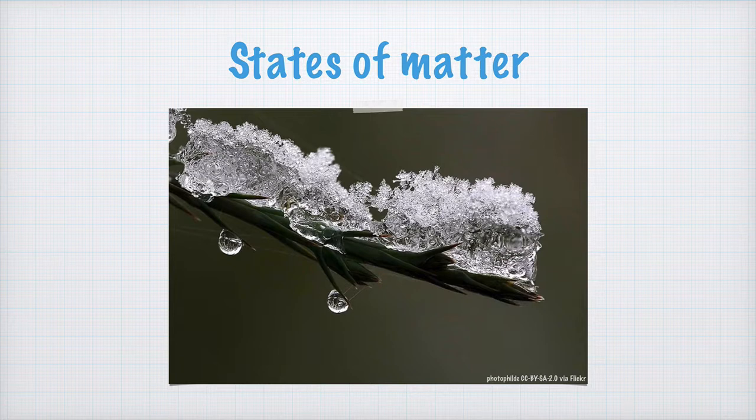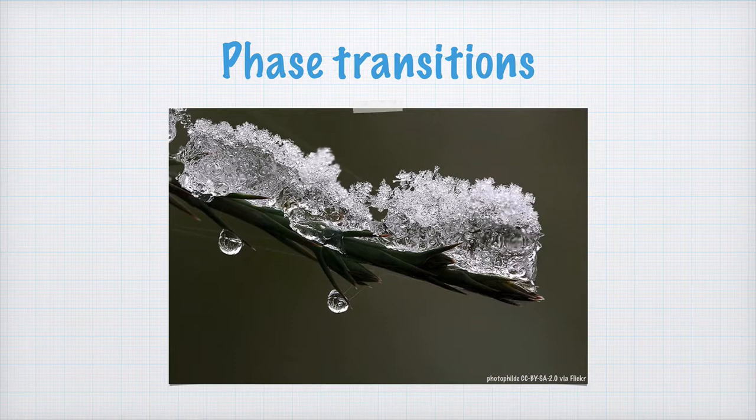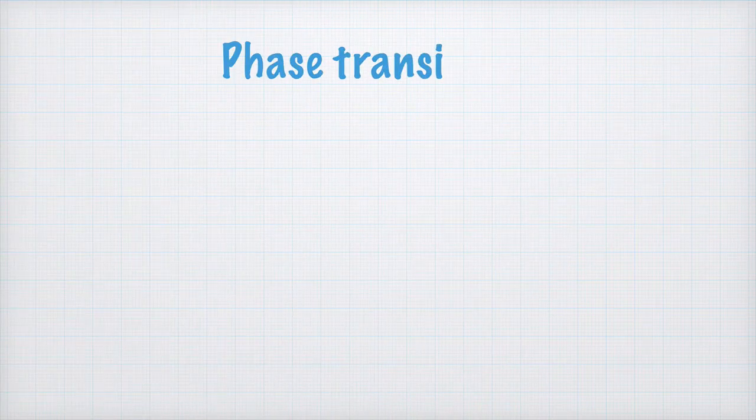When matter changes from one state to another, it's called a phase transition. When it changes from solid to liquid, it's called melting.